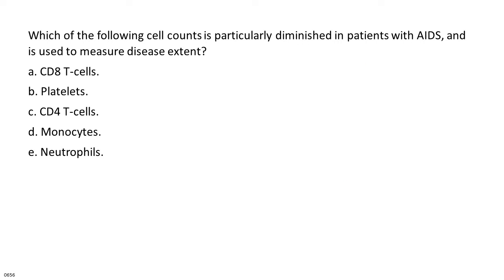Which of the following cell counts is particularly diminished in patients with AIDS, and is used to measure disease extent? A. CD8 T cells. B. Platelets. C. CD4 T cells. D. Monocytes. E. Neutrophils.